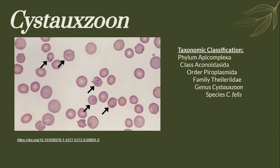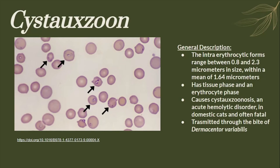Here is the taxonomic classification of the genus Cystoxone. The intraerythrocytic forms range between 0.8 and 2.3 micrometers in size, with a mean of 1.64 micrometers. It has a tissue phase and an erythrocyte phase. It causes Cystoxoonosis, an acute hemolytic disorder, which is often fatal. It is transmitted through the bite of Dermacentor variabilis.